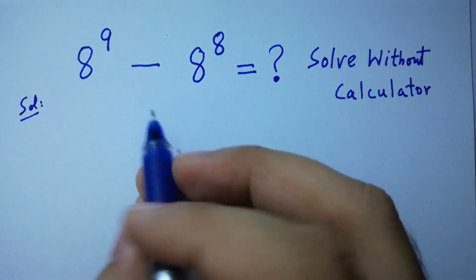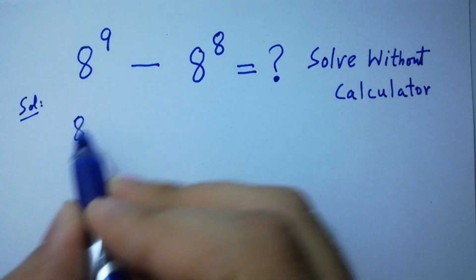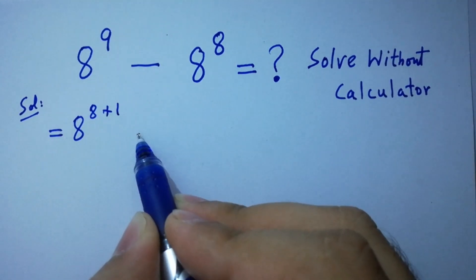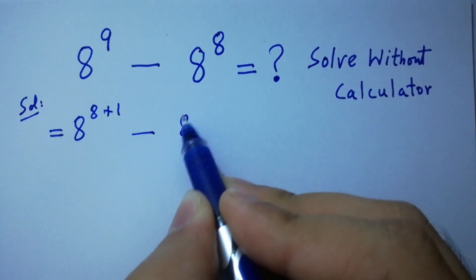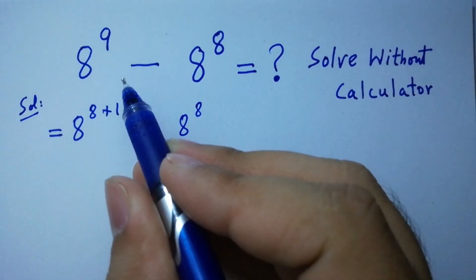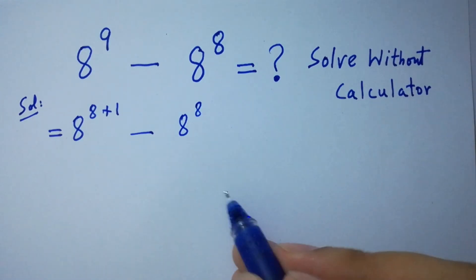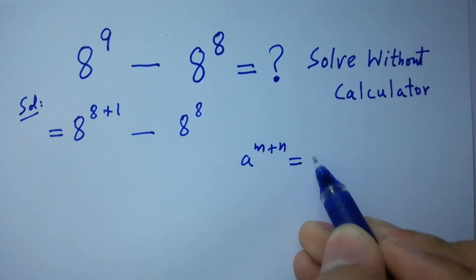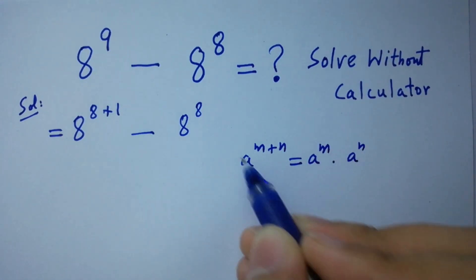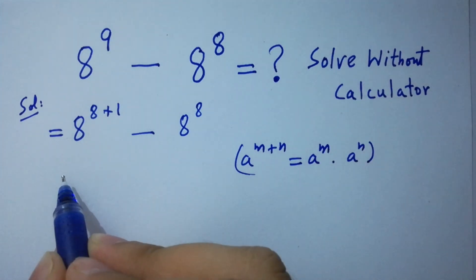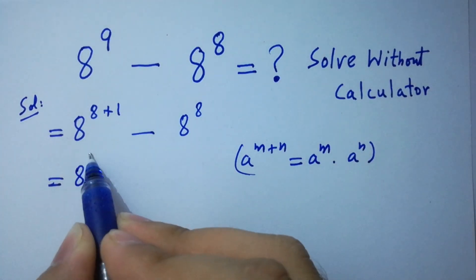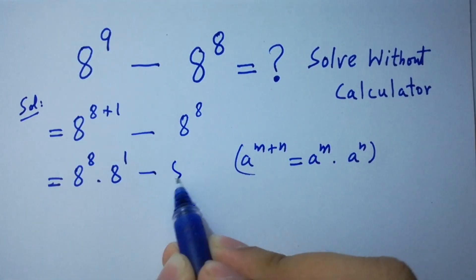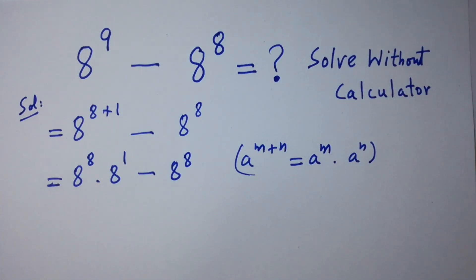This is the same as 8 to the power 8 plus 1 minus 8 to the power 8, since 8 plus 1 is equal to 9. As we know, a to the power m plus n equals a to the power m times a to the power n. Then it will be 8 to the power 8 times 8 to the power 1 minus 8 to the power 8 as it is.